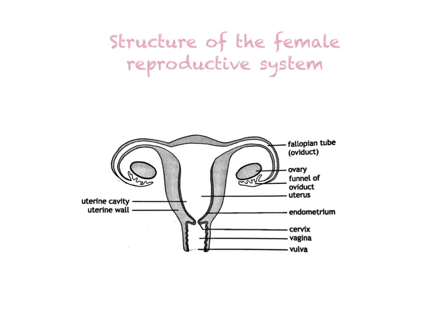Today we're going to look at the structure of the female reproductive system. It's a little bit simpler, maybe because we have one, but also because the terms are just easier. There are fewer glands involved, so therefore fewer terminology and function questions.